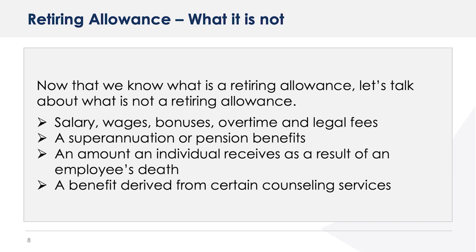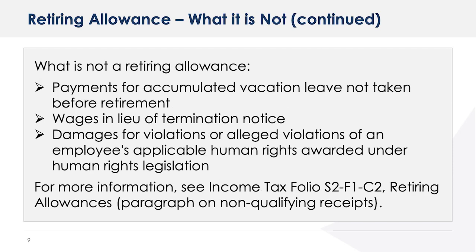Now that we know what a retiring allowance is, let's talk about what is not a retiring allowance. Salary, wages, bonuses, overtime and legal fees; a superannuation or pension benefits; an amount an individual receives as a result of an employee's death; a benefit derived from certain counselling services; payments for accumulated vacation leave not taken before retirement; wages in lieu of termination notice; and damages for violations or alleged violations of an employee's applicable human rights awarded under human rights legislation.